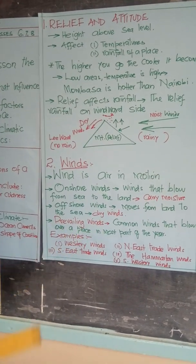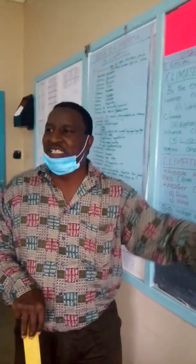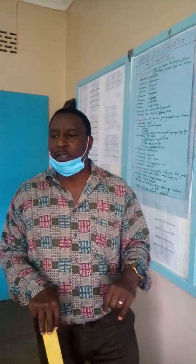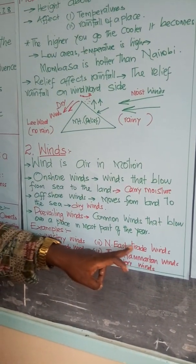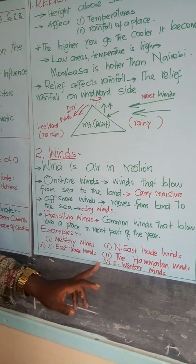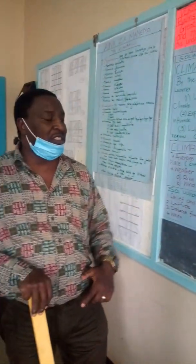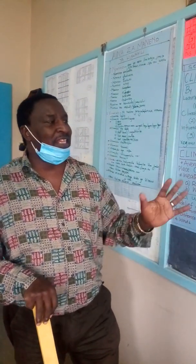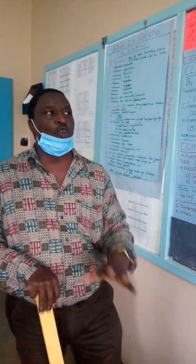Number three are prevailing winds. Prevailing winds come from the word 'prevail' — these are the common winds found in a certain place over a long period of the year. Good examples are the westerly winds, south-east trade winds, north-east trade winds, and south-westerly winds. These different prevailing winds carry moisture or could be dry, and therefore they affect whether a place is going to be wet or dry.